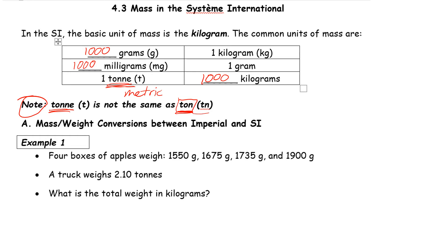So there are a few differences between imperial and SI. Here's a question: we have four boxes of apples that weigh 1,550 grams, 1,675 grams, 1,735 grams, and 1,900 grams. The truck weighs 2.1 tons. What is the total weight in kilograms?